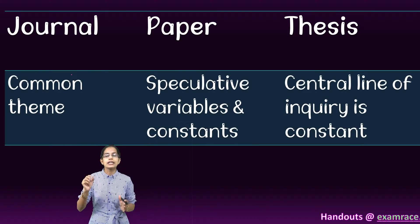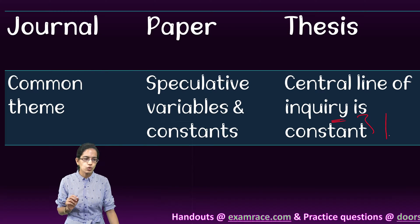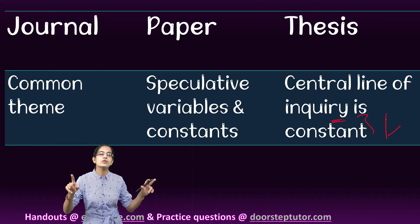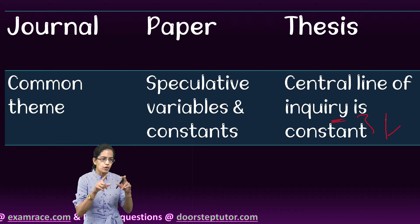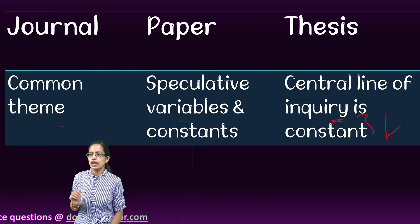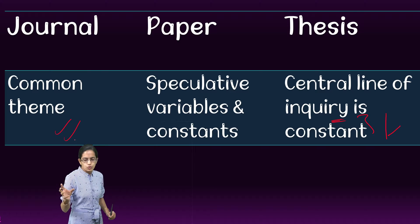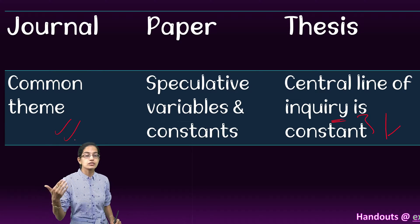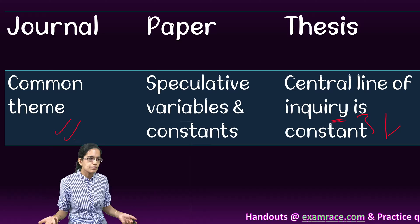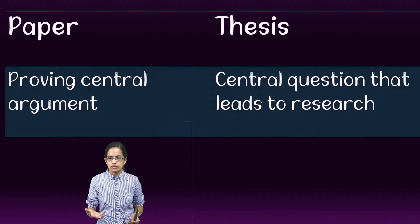The central idea in a thesis is the inquiry, and that inquiry is always constant. So the thesis question opens up the boundaries of variable possibilities and the central line of inquiry. However, a journal revolves around a common theme, and the papers within it can have speculative variables — meaning the majority of them could be nullified or could remain constant.